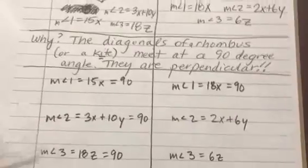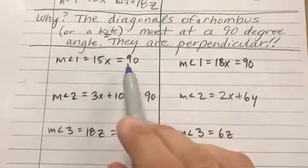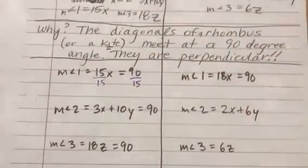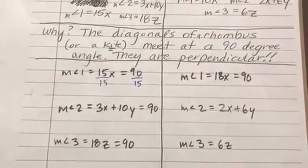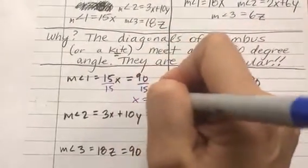So we want to get x by himself on one side. So we divide both sides by 15. And 90 divided by 15 is 6. So x here is 6.